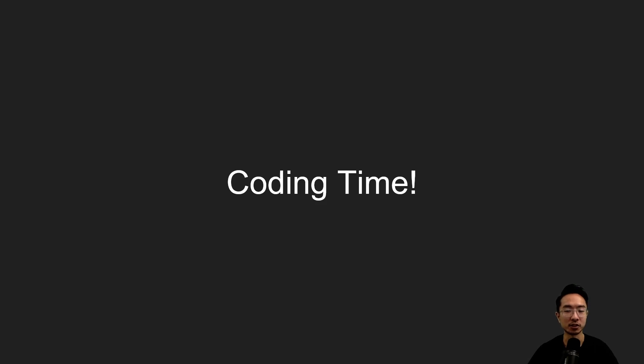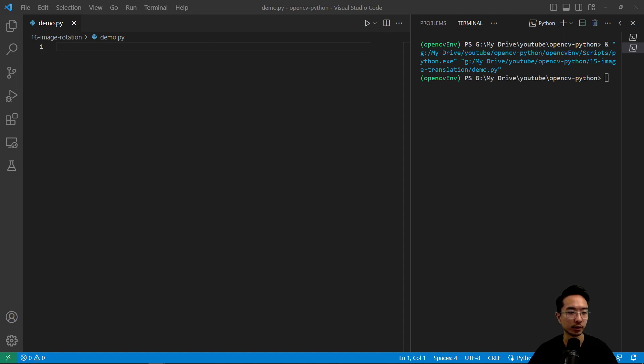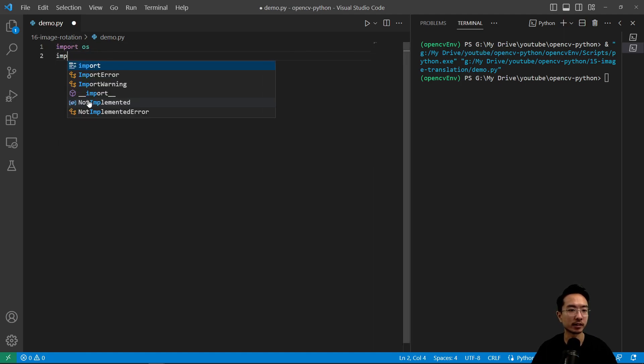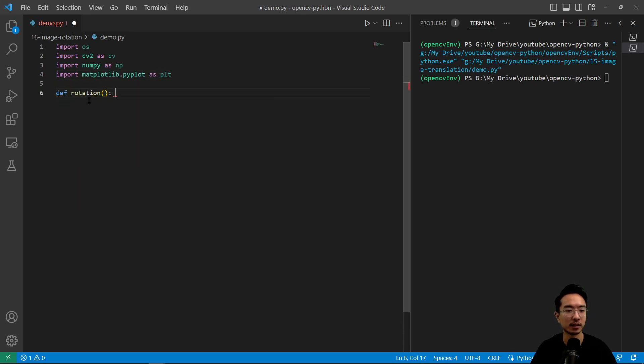Okay, so we're going to do some of our usual stuff which is to import the different modules that we'll need. So import os, import cv2 as cv, import numpy as np, import matplotlib.pyplot as plt. And then we're going to make our function rotation. And then our if name equals main. And inside here we're going to call our rotation function.